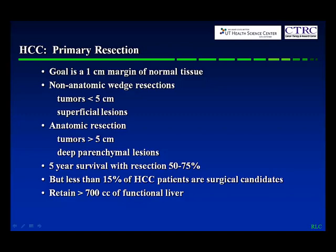Another goal the surgeons have is to retain at least a minimum of 700 cc's of functional liver. Remember, these are in patients who are surgical candidates, meaning their livers are working pretty well. So if you have a diseased liver, 700 cc's wouldn't be enough.